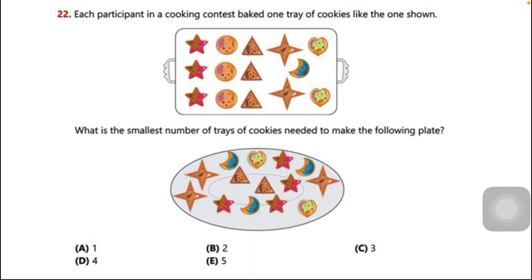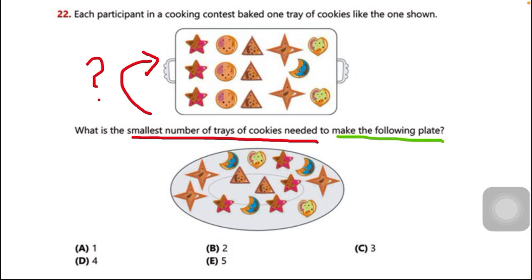There is a tray with different shaped cookies on it. What is the smallest number of trays of cookies needed to make the following plate shown below? It means how many trays do we need in order to fill that plate by taking cookies from the trays. The options are A, B, C, D, E — one, two, three, four, five.